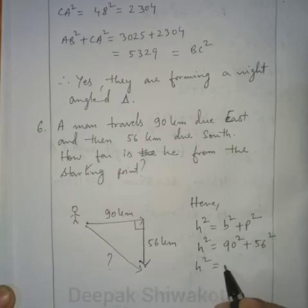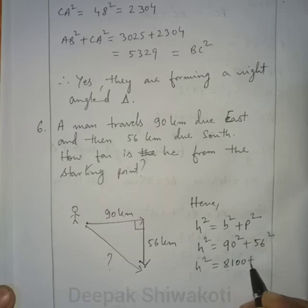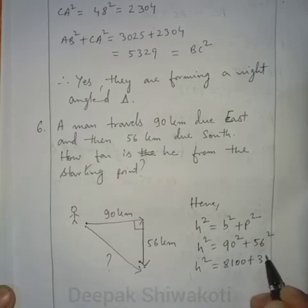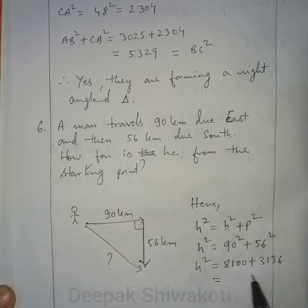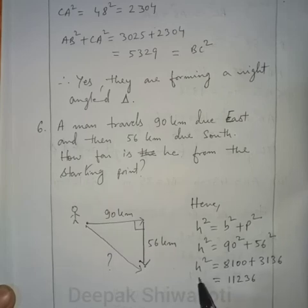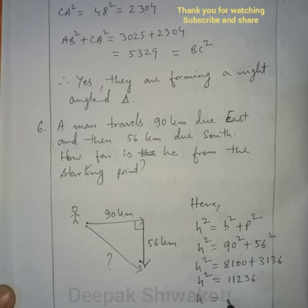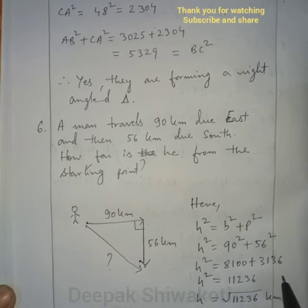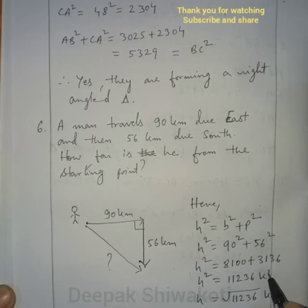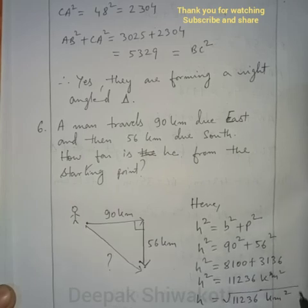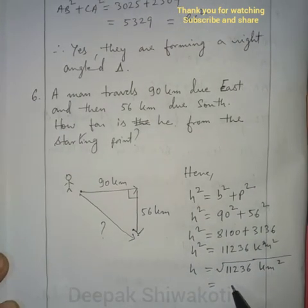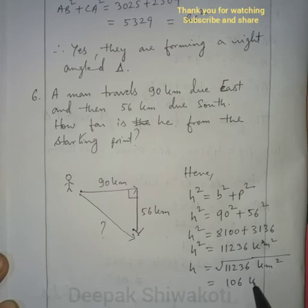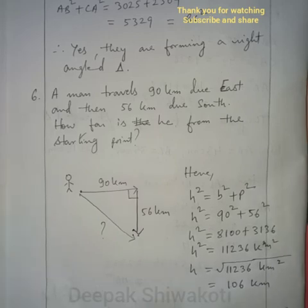90² = 8100 and 56² = 3136. The sum is 8100 + 3136 = 11236. So hypotenuse = √11236 km. Calculating the square root, we get 106 km. Therefore, the man is 106 km from his starting point.